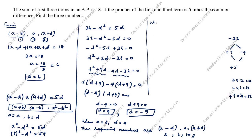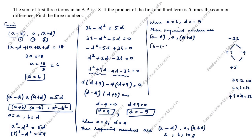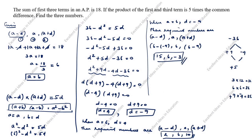When A is equal to 6 and D is equal to minus 9, the required numbers are A minus D, A, A plus D. Substituting: 6 minus (minus 9) is 6 plus 9 which is 15, then 6, then 6 plus (minus 9) is 6 minus 9 which is minus 3. So the three numbers are 15, 6, minus 3. These two sets are the answer. Thanks for watching this video.